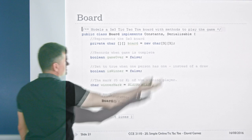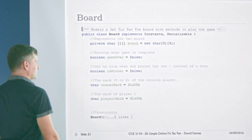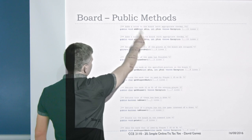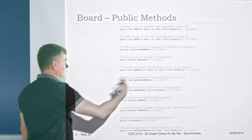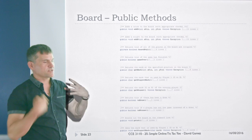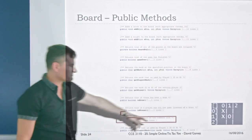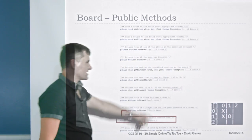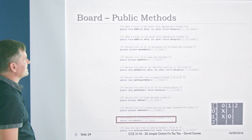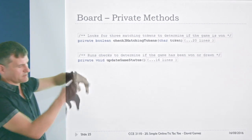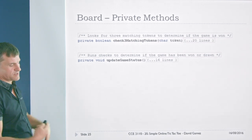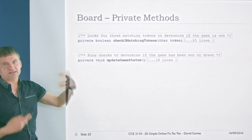The board itself is represented by a simple two-dimensional char array, with various booleans to represent whether the game's over, who's won, and so on. It's serializable, and has a bunch of methods to actually play the game: add a cross, add a nought, with error checking like board full and game over, plus get mark, get player one mark, get winner, is draw, is winner. There's also a print method — that's what produced those delightful rudimentary graphics in the demo. And a couple of utility methods for checking three matching tokens vertically and horizontally, plus update game status to check whether the game has been won.